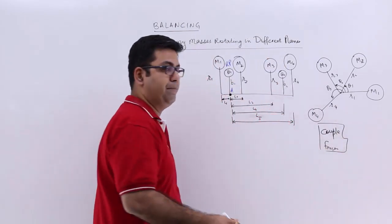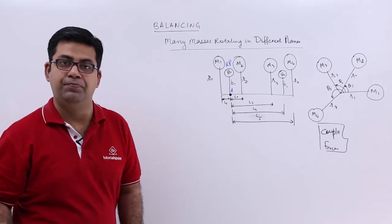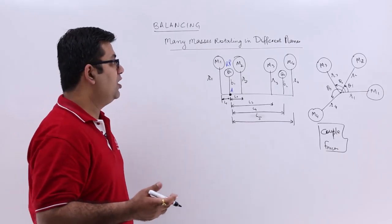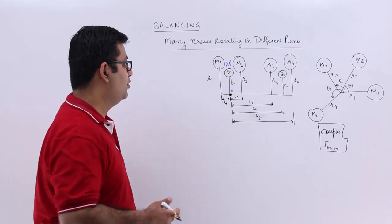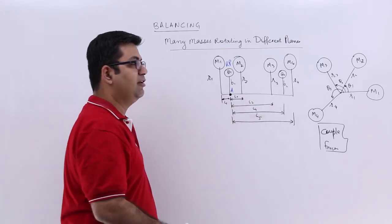So we will draw a couple polygon and a force polygon. So how do we do that? Because we don't know either B1 and B2.